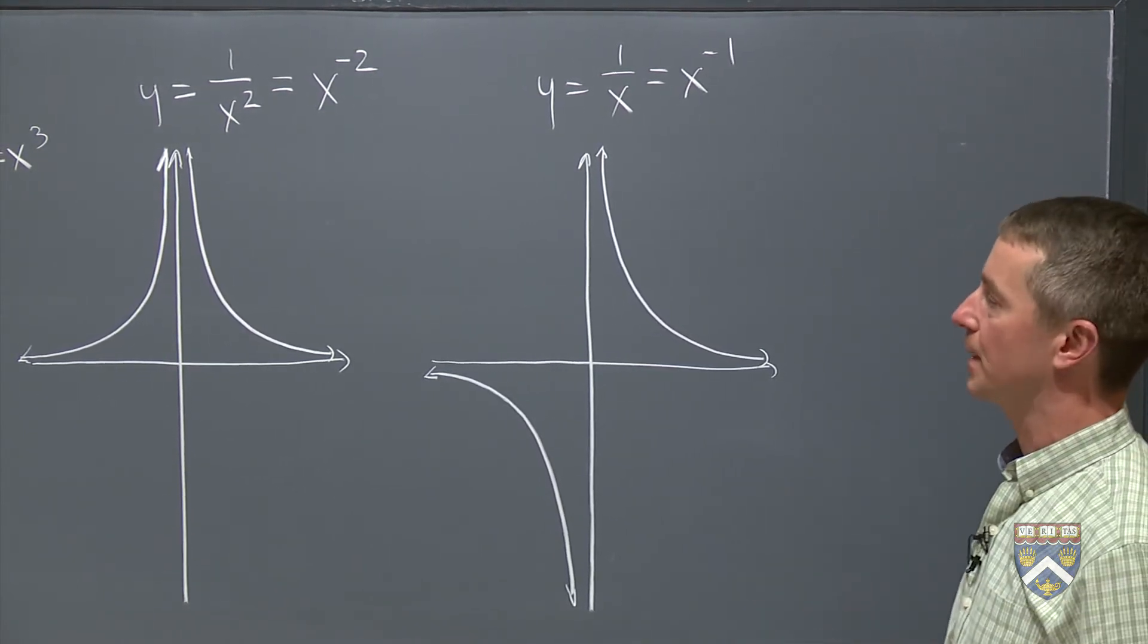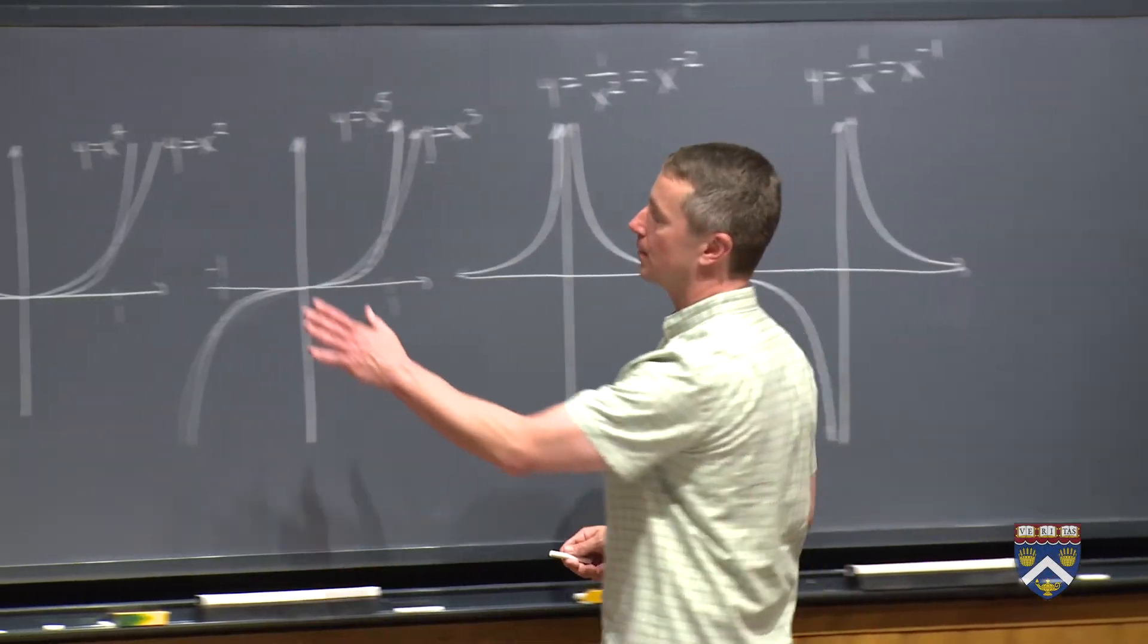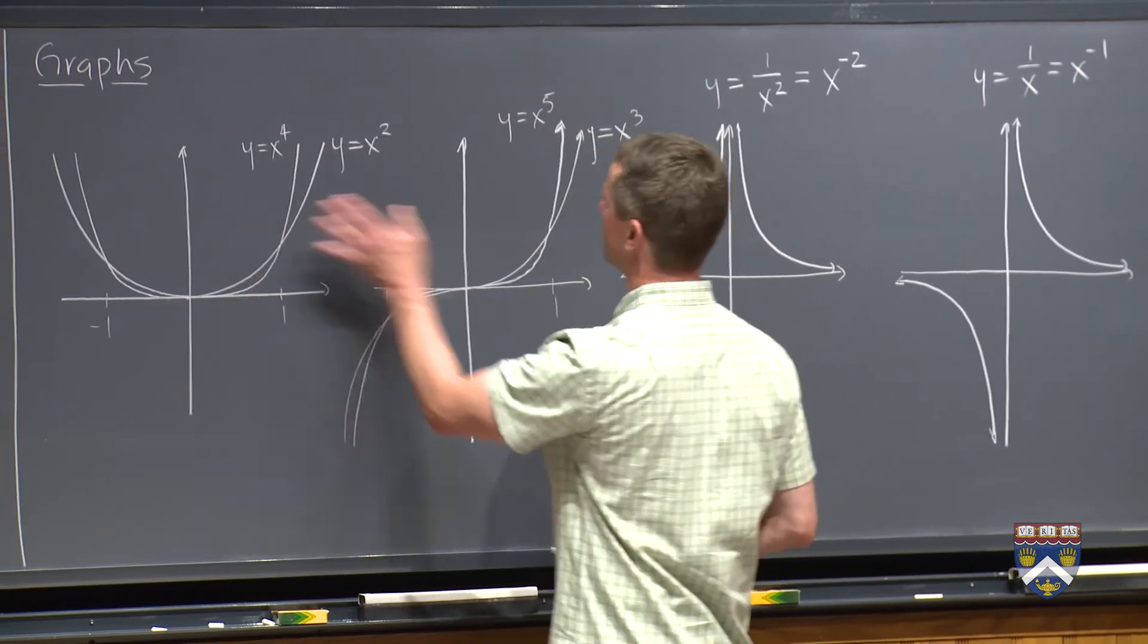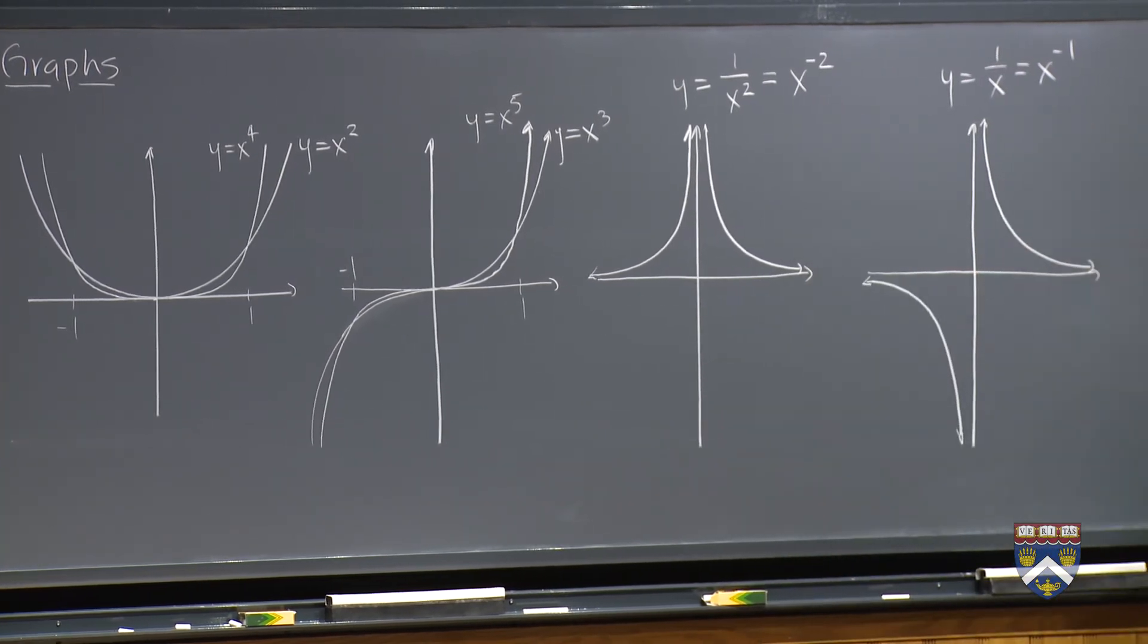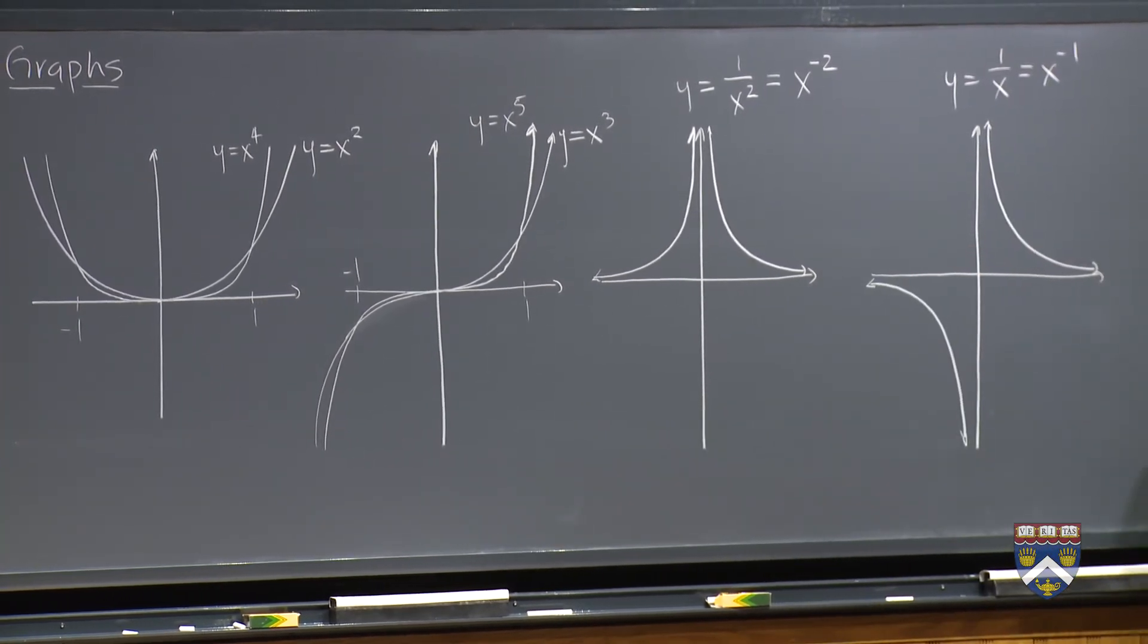So these are the basic shapes that we want to be able to recognize: positive exponents that are even, positive exponents that are odd, negative exponents that are even, negative exponents that are odd.